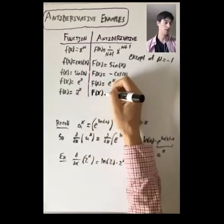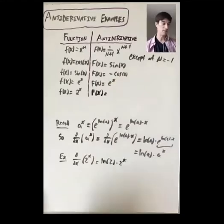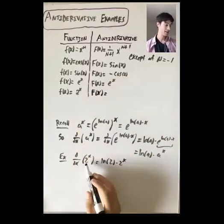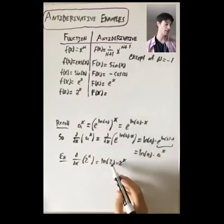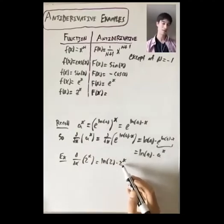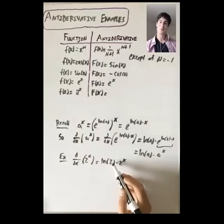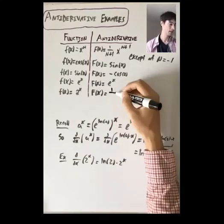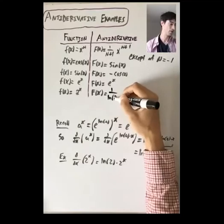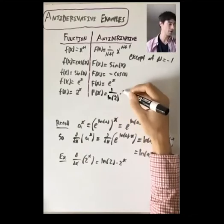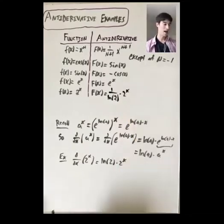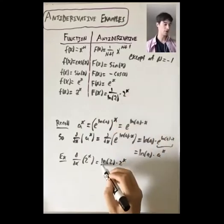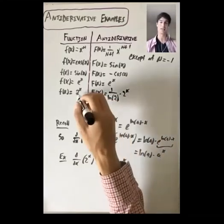So if you want to find a function whose derivative is 2 to the x — or 1 times 2 to the x — you take the derivative of 2 to the x and get some number times 2 to the x. So you just take 1 over that number, which in this case is 1 over the natural log of 2 times 2 to the x. Now the natural log of 2s cancel, and we just get 2 to the x.